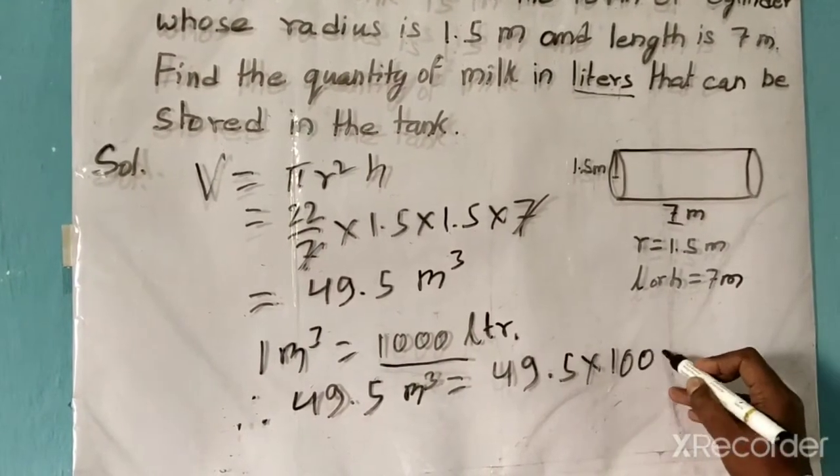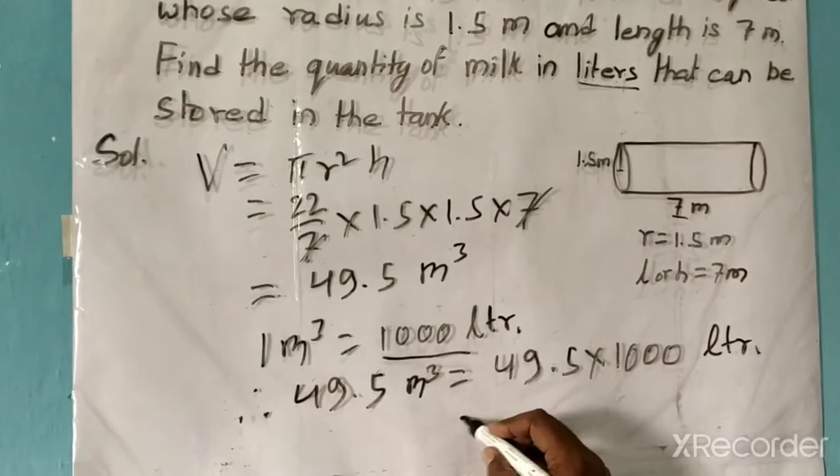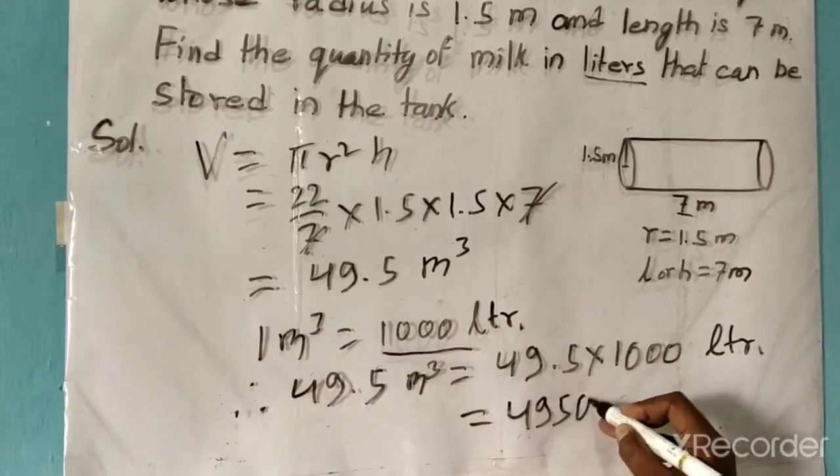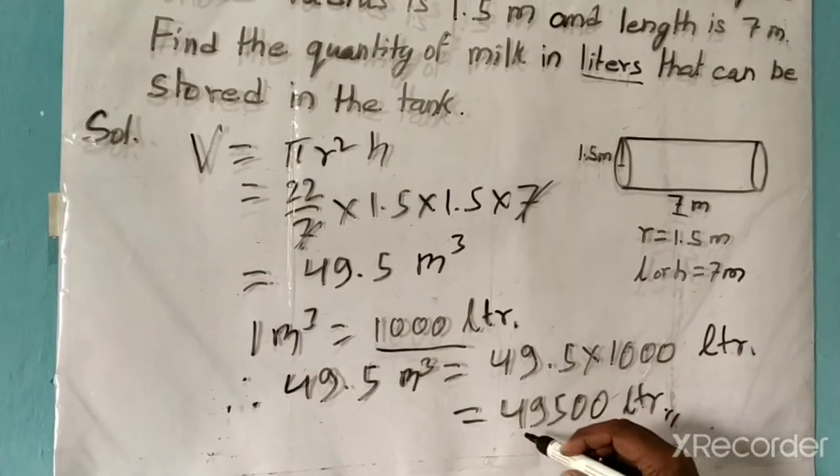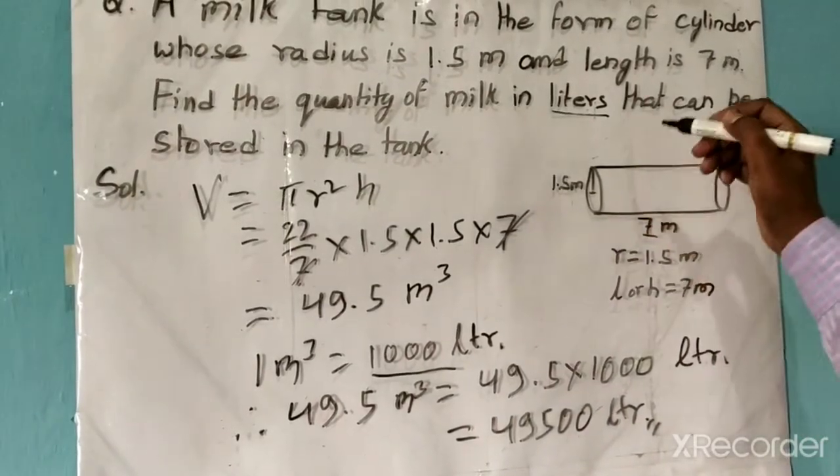Now this will be equal to 49,500. This is the answer, this is the capacity of this cylinder in liters.